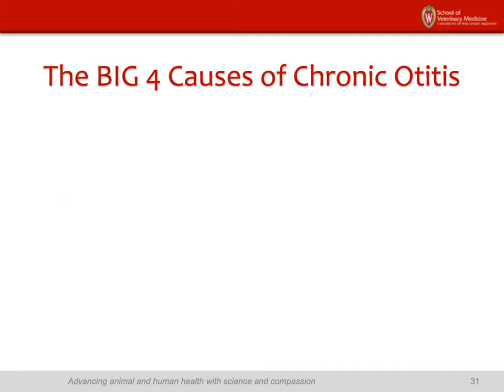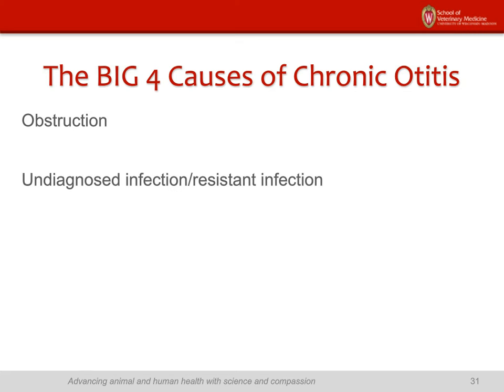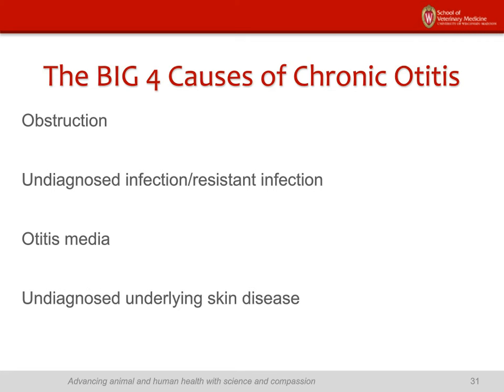There are four big causes of chronic otitis. First is obstruction — which can be a foreign body, a tumor, or treatable stenosis. Second is undiagnosed or resistant infection — cultures often haven't been done, things were treated empirically, or yeast weren't treated and have been perpetuating the problem. Third is undiagnosed middle ear infection. Fourth is a perpetuating underlying trigger such as allergies and seborrheic disease. When you have a dog with chronic otitis, think: is there an obstruction? Is there a resistant infection? Could there be middle ear disease? Or is there an underlying whole-body disease? You can have multiples of these.